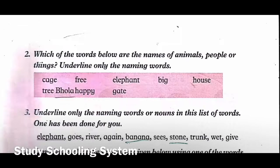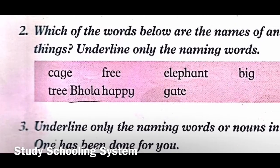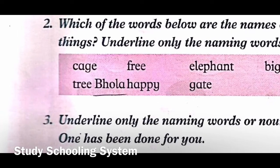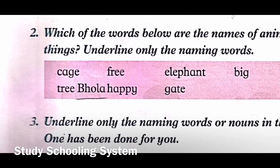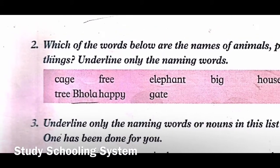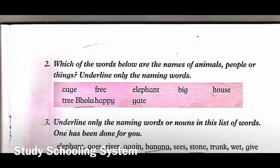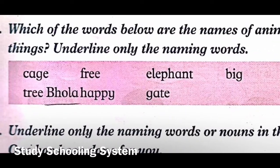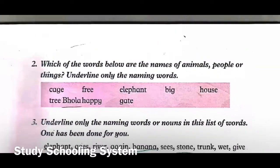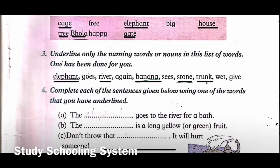'Big' is a describing word - an adjective, do not underline it. 'House' is a thing - yes, underline it. 'Tree' is also a thing - underline it. 'Bola' is a person - underline it, it's a noun. 'Happy' is a describing word - not an animal, thing, or person, so do not underline it. 'Gate' is a thing - underline it. The underlined words are: cage, elephant, house, tree, Bola, gate - six words underlined because these are nouns.